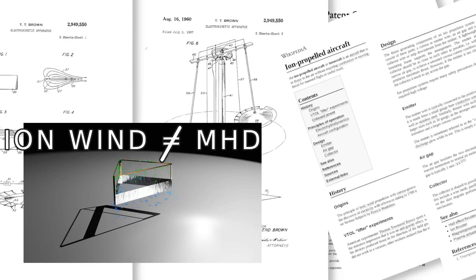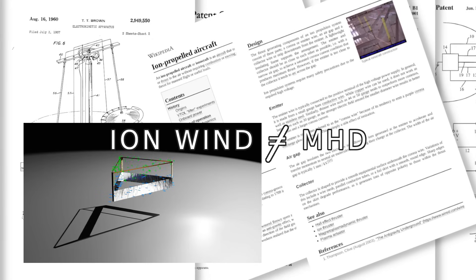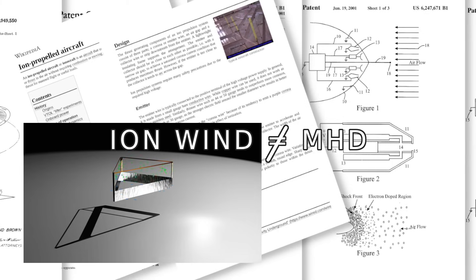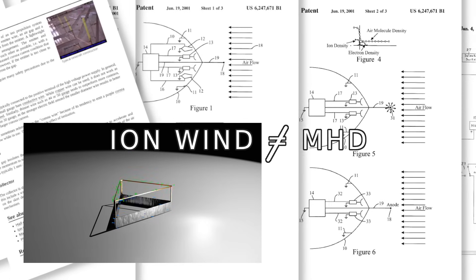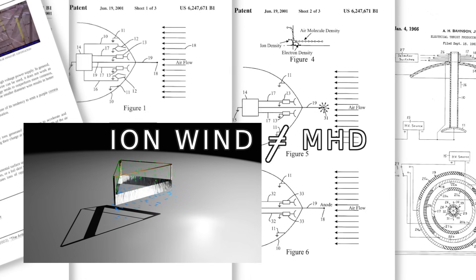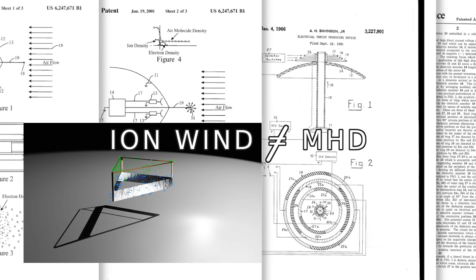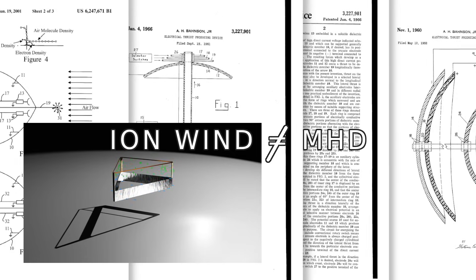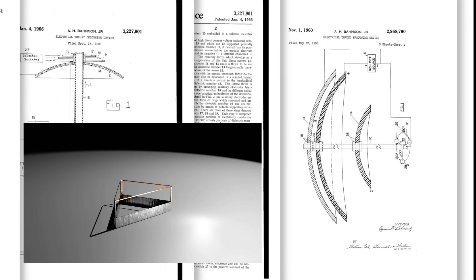What typically happens in a conversation involving somebody explaining what MHD propulsion is, one begins to confuse MHD propulsion with ion wind propulsion. And if one does not confuse these two categories of propulsion with one another, one at least is immediately thinking and or mentioning ion wind propulsion within the same conversation. So in a video like this, it is important to explain the difference between ion wind propulsion and MHD propulsion before we go any further.